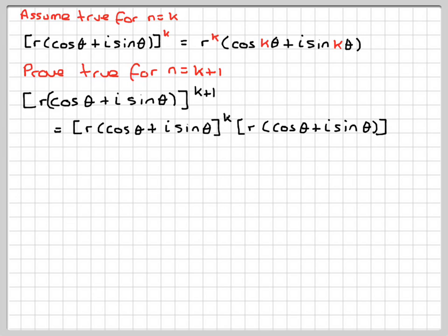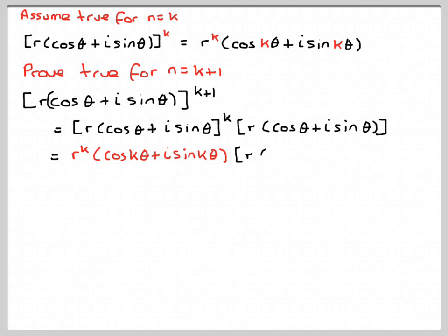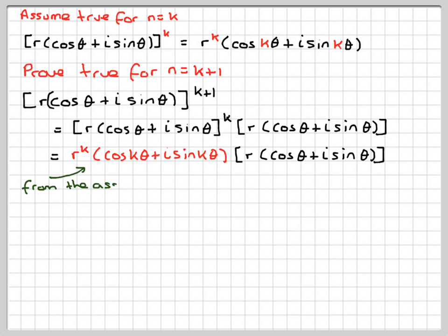This is equal to this according to the assumption. So we've got r to the k, brackets cos(kθ) + i sin(kθ), and this stays the same, so we're still going to multiply by r(cos θ + i sin θ). Now r to the k times r is r to the k plus 1.